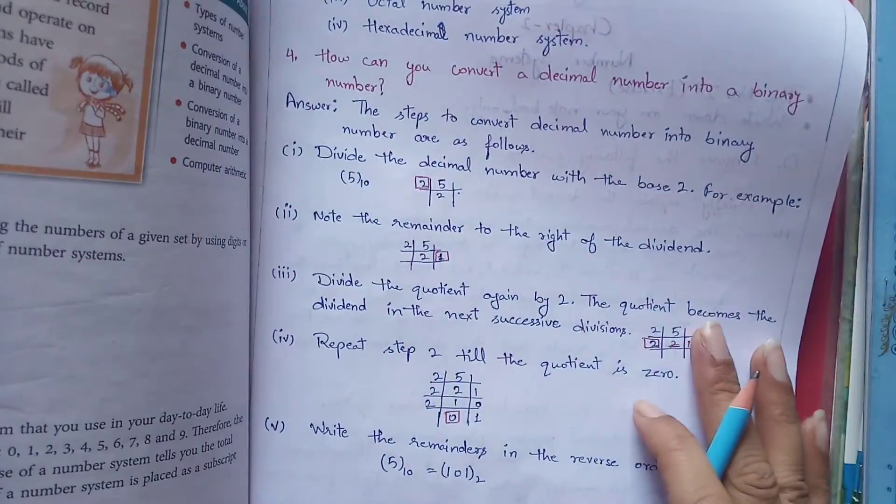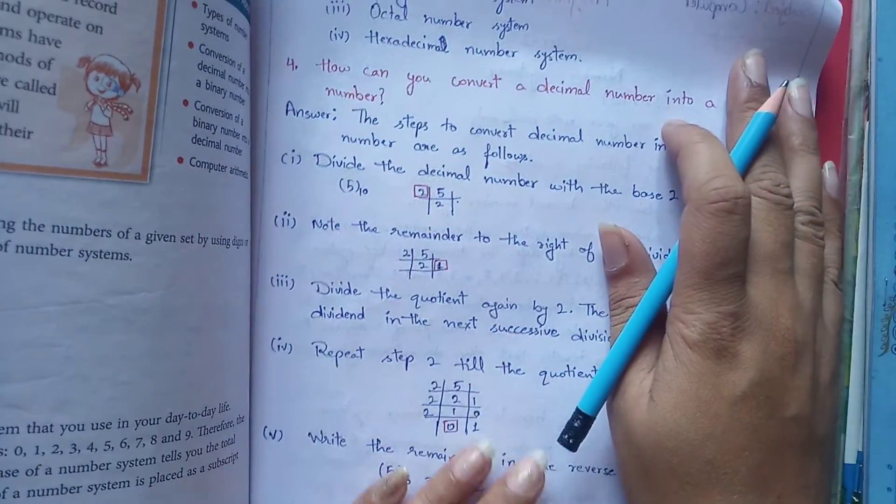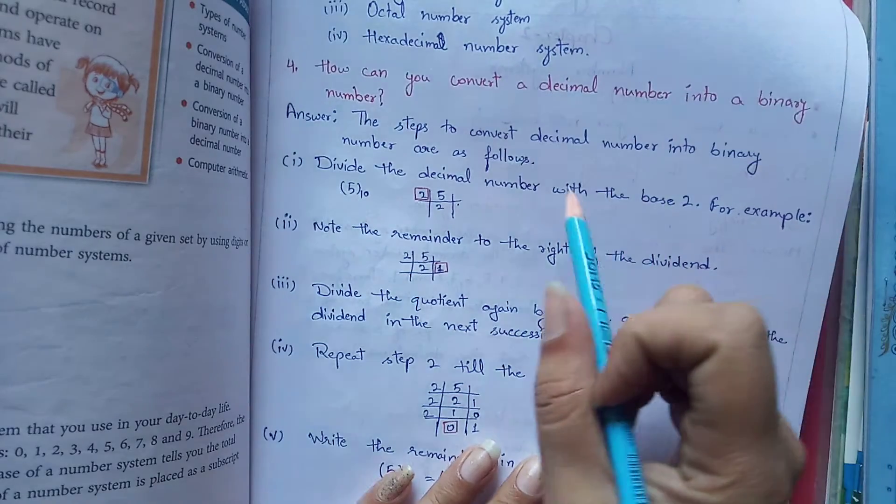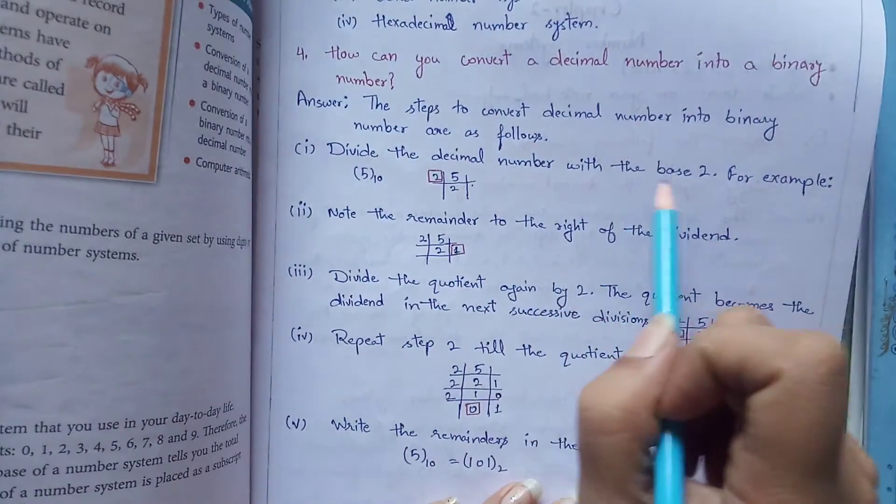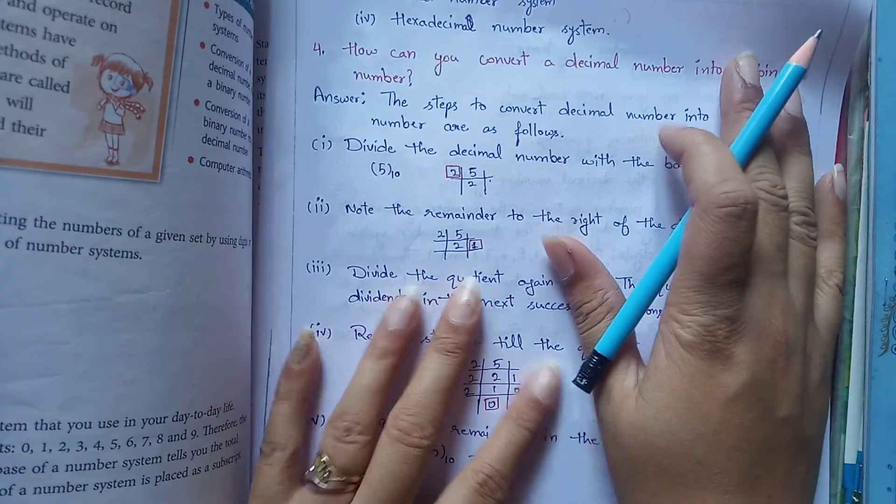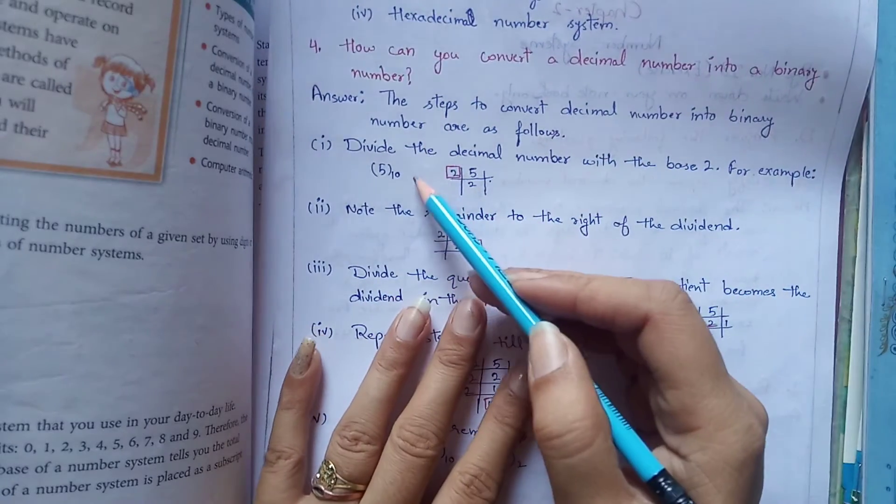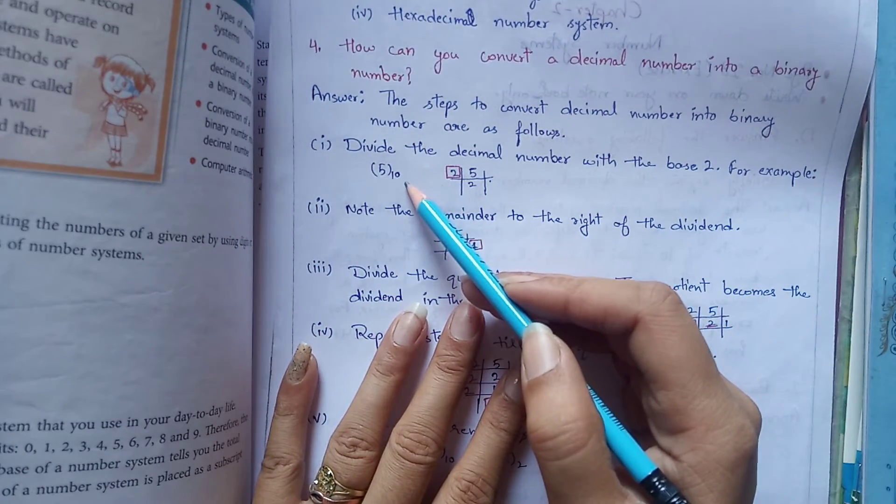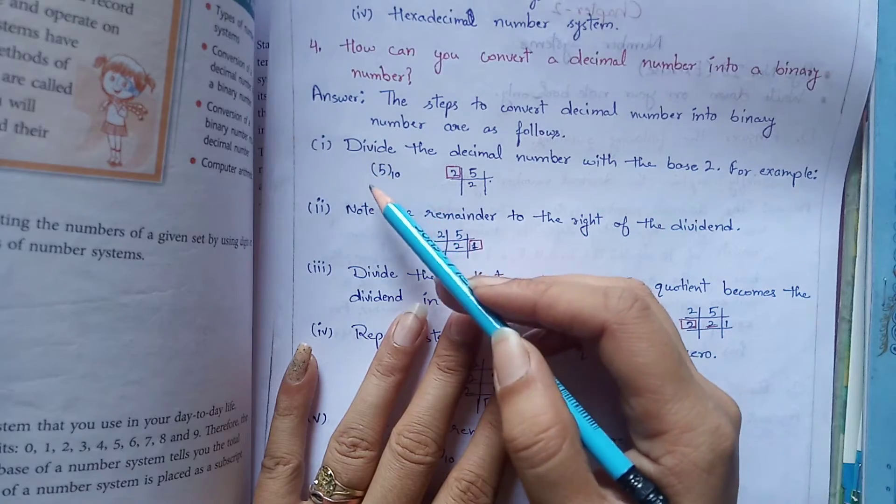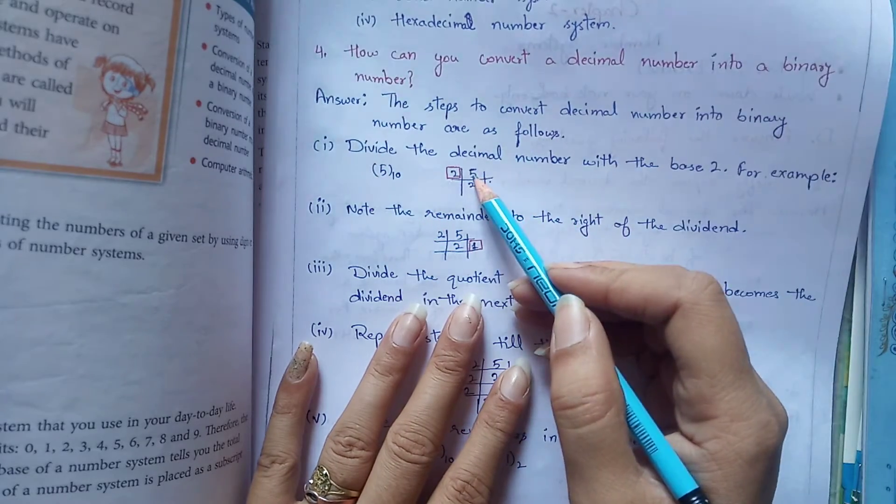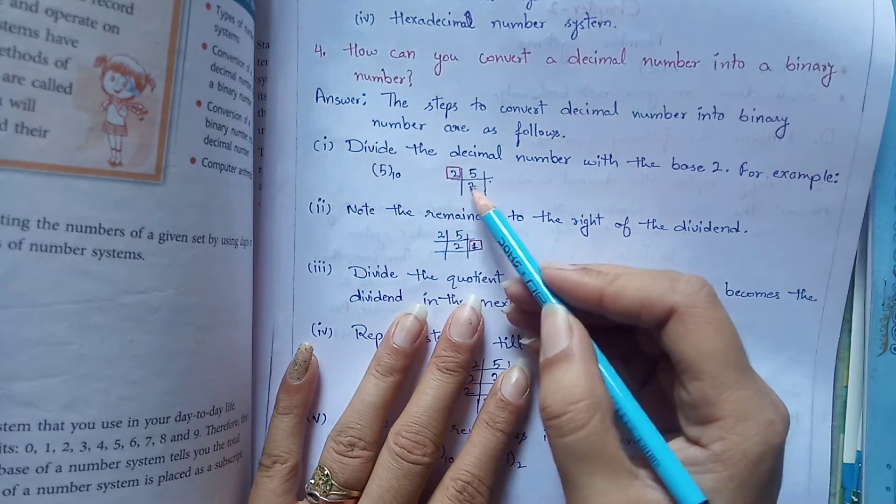Fourth question is how can you convert a decimal number into binary? First step is divide the decimal number with the base 2. So here I have an example. I have 5 subscript 10, that means base is 10, it's a decimal number. So my first step is I have divided it by 2. So my quotient is 2.